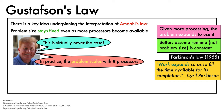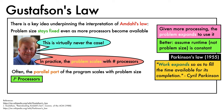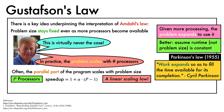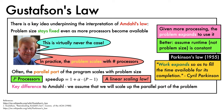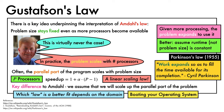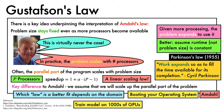A major part of Gustafson's law is the observation that it is often the parallel part of the program that scales with problem size. As a result, the speedup with p processors is better modelled by 1 plus alpha times (p minus 1), a linear scaling law as a function of p. A key difference from Amdahl's law is that we assume the practitioner will be able to scale up the parallel part of the problem. In machine learning, we now see teams training on thousands of GPUs and achieving near-linear speedups, closely matching Gustafson's law.